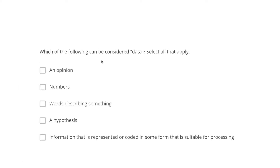Next question: Which of the following can be considered as data? Select all that apply. Option A: an opinion. Option B: a number. Option C: a word describing something. Option D: a hypothesis. Option E: information that is represented or coded in some form suitable for processing. Data cannot be an opinion - I cannot say 'I like to eat mango' is data. Data should be some observation from testing, some kind of fact, not the opinion of a particular individual.